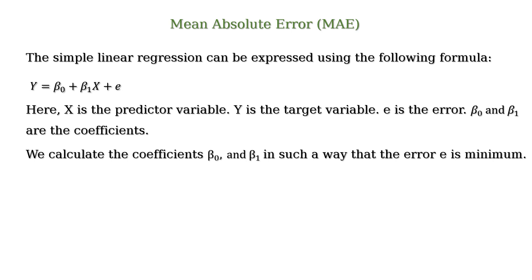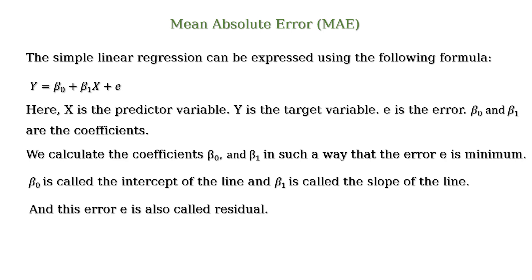beta0 and beta1 are calculated in such a way that the error e is minimum. Beta0 is called the intercept of the line and beta1 is called the slope of the line and this error e is also called the residual.